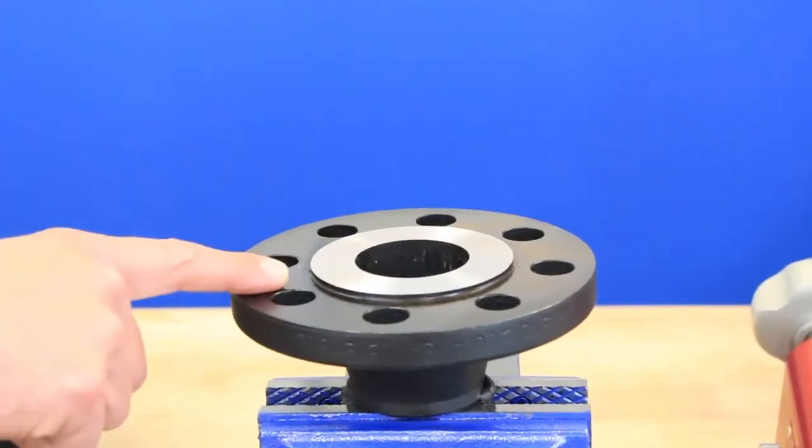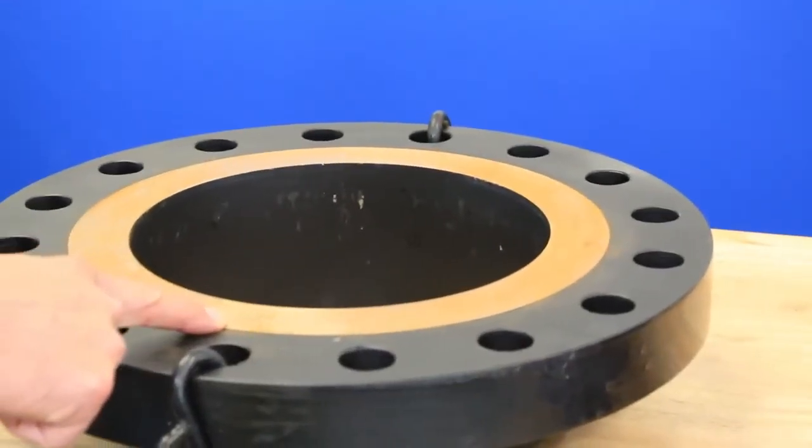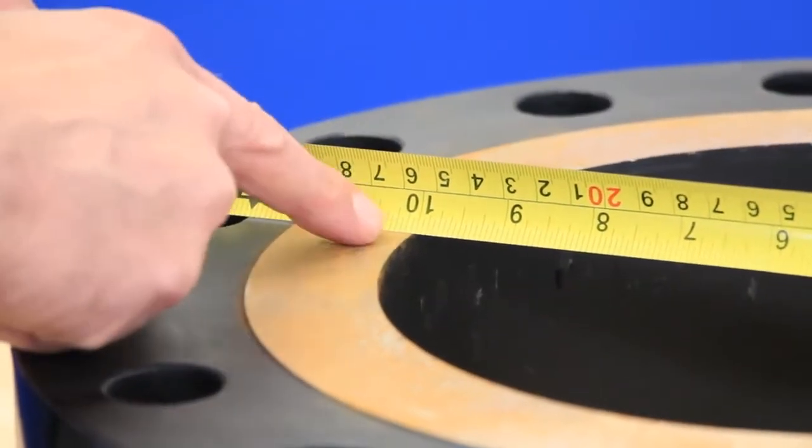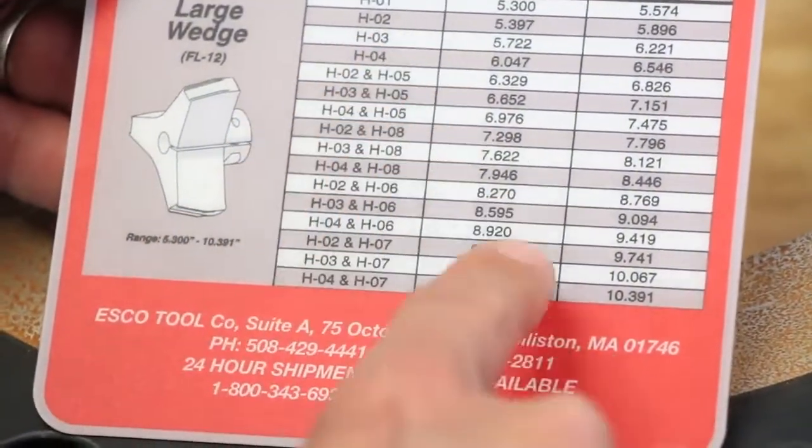Now we will show the setup and facing process on a 10-inch flange. First steps for this process are the same as discussed in the first example. Measure the ID of the flange and consult your chart for tooling configurations.